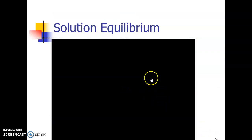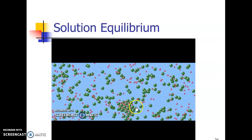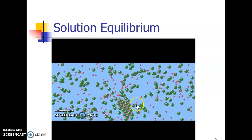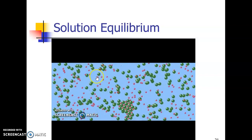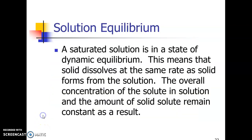Now let's see if I can get this video to play to show the equilibrium that's present in it. So you can see this is a saturated solution. So you can see that there's particles crystallizing at the same time as there are particles dissolving and there is a lump of solid. The solution around the solid would be considered to be the saturated solution. Alright, so saturated solution is in a state of dynamic equilibrium. This means that the solid dissolves at the same rate as solid forms from the solution. The overall concentration of the solute in the solution and the amount of solid solute remain constant as a result.